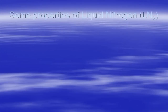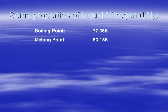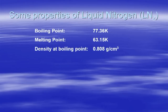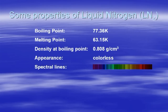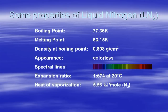Let's look briefly at some properties of liquid nitrogen. Its boiling point is approximately 77 Kelvin at 1 atmosphere. Its melting point at 1 atmosphere is about 63 K. Its density is 0.8 grams per cubic centimeter. It is a clear colorless liquid. The heat required to take one mole of nitrogen from a liquid to a gas is 5.56 kilojoules. While much less than water at 40.65 kilojoules, it is more than enough to cause severe damage to tissue that comes in contact with it.